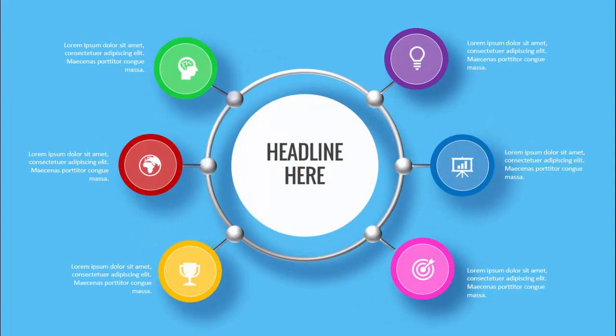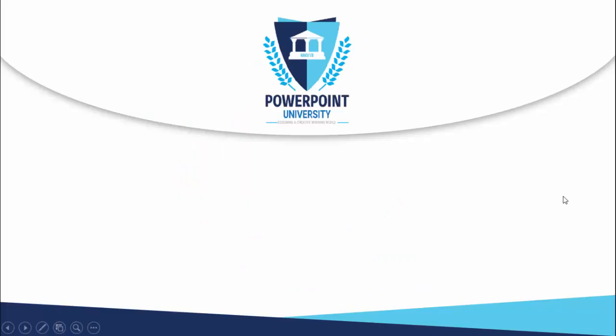In today's tutorial I am going to show you how to create a six options infographic slide in PowerPoint. In the center I have added an oval shape where you can add your headline, and I have given it a 3D look. You can add icons and a shadow effect for each option, and then add some detailed text to it.